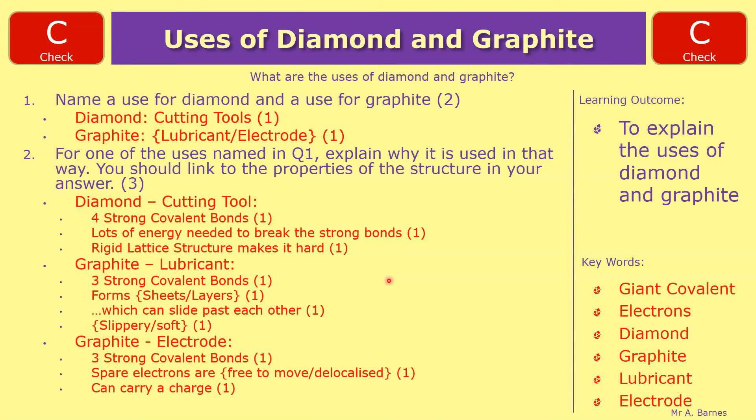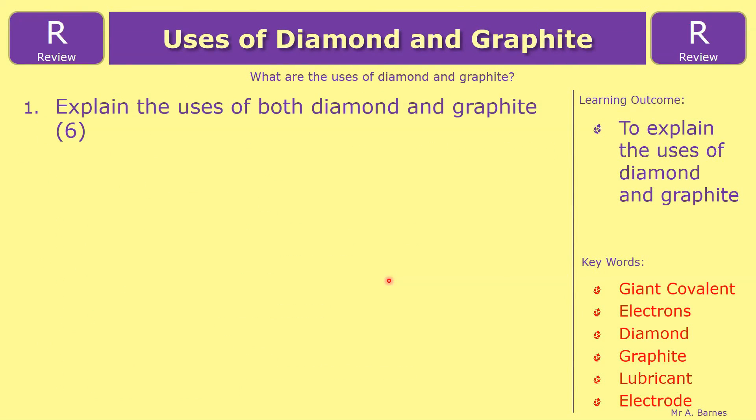That about sums up this video. Your review question is a six marker, which has explained the uses of both diamond and graphite, which should now be fairly straightforward.